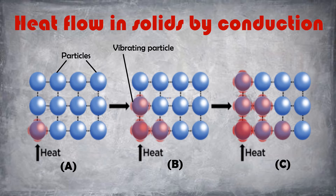The diagram here depicts how heat flows in solids by conduction. Figure A shows the arrangement of particles in solids — as you can see, the particles are closely packed and not free to move. When heat is supplied to a solid, particles near the heat source gain energy and start vibrating rapidly. Due to this vibrational motion they collide with adjacent particles, transfer their energy, and conduct the heat energy further.